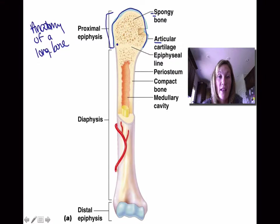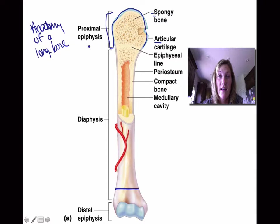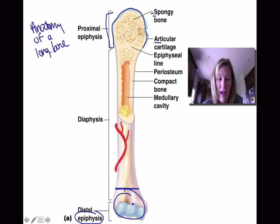Then we have this space right in here — the epiphyseal line, or the epiphyseal plate if it's a growing bone. And at the same time, we have one that's down here as well. You just can't see it because it's covered. But that's the same. You'll see that line in each section, same with this other picture down there.